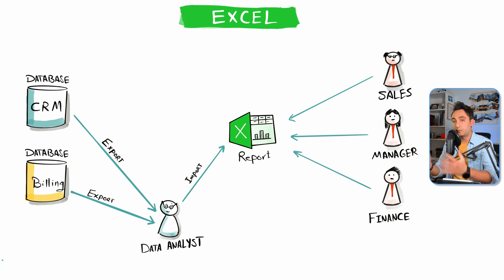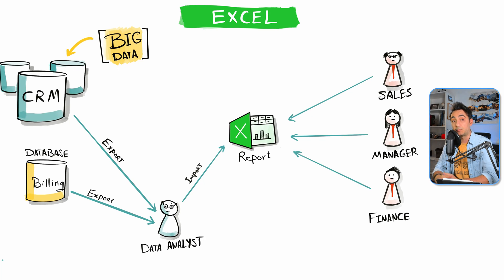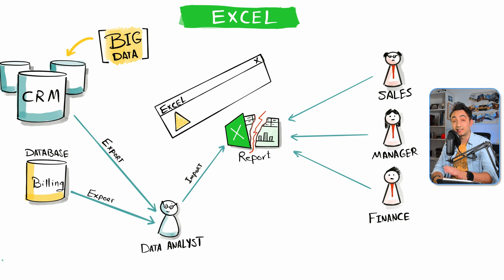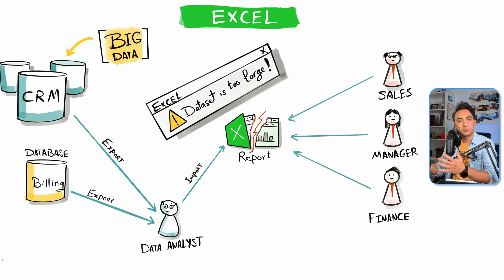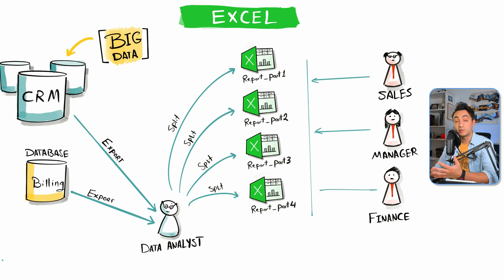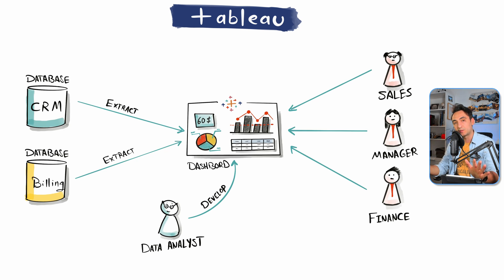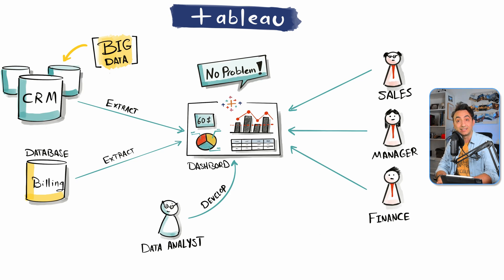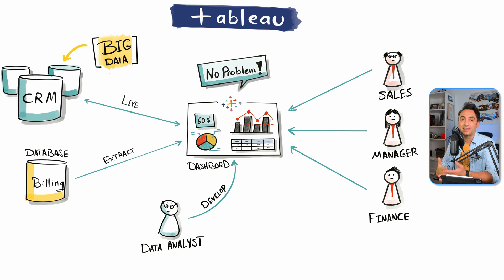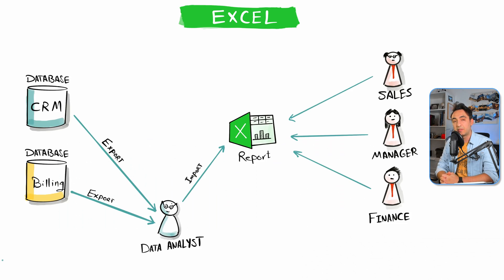Another benefit is capacity. If a source system starts generating massive amounts of data, Excel has a problem because it can handle only around one million records. Our Excel file will break and we'll get errors like 'the dataset is too large,' forcing us to split the main file into multiple smaller files, which is really hard to manage. With Tableau, we don't have to worry about that — Tableau is made for big data use cases and can easily handle massive amounts of data. We might just change the connection type from extract to live.